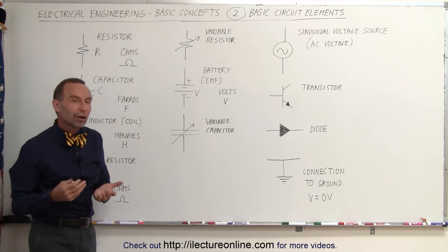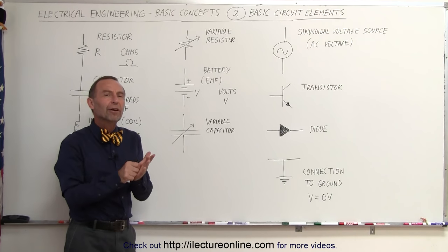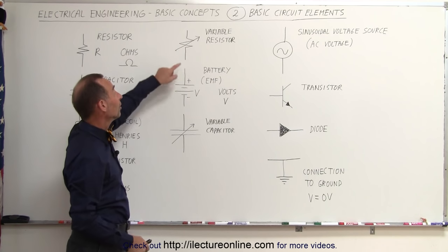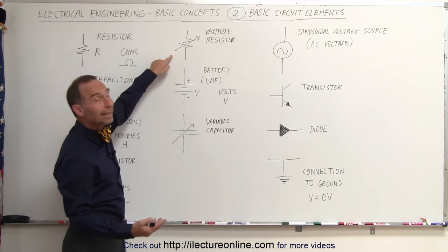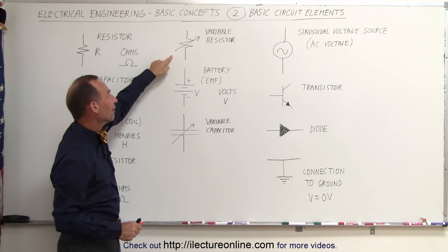Sometimes we have what we call variable resistors, resistors that we can vary, so we can vary the resistance of the resistor. We draw a little arrow through that, that indicates that the resistor can be changed in value.